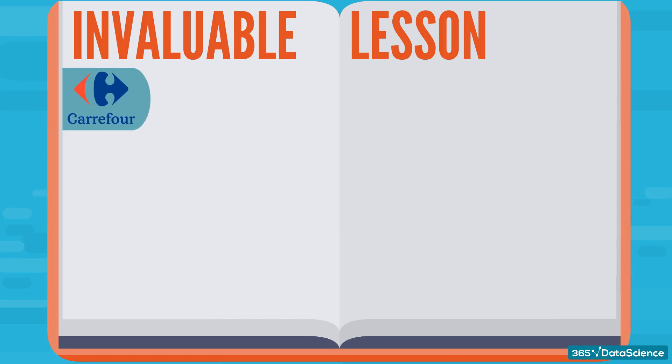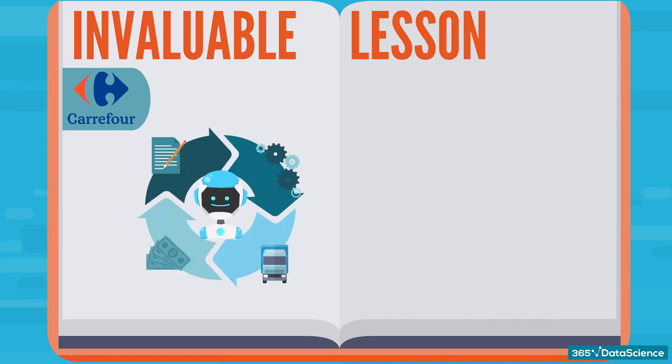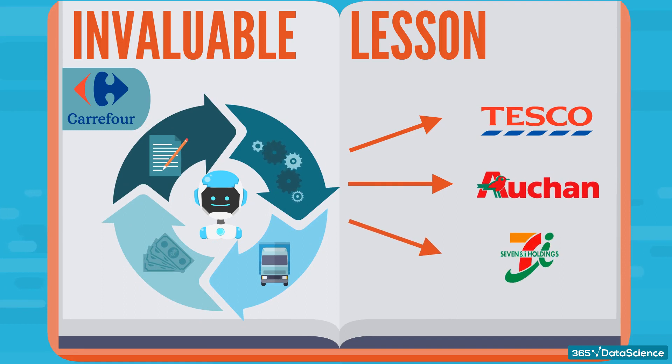If for example, Carrefour managed to leverage AI to improve its supply chain processes, the rest of the global hypermarket chains would basically be obliged to follow if they want to keep up.